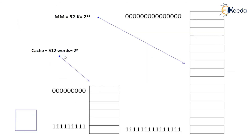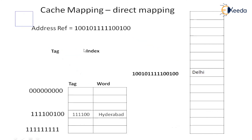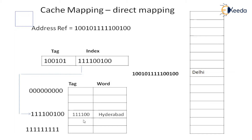To summarize direct mapping: the CPU sends a 15-digit address. That address must be searched within the cache, but there is an address mismatch — 15 digits versus 9 digits. So the address is divided into index and tag. The index is located in the cache, the tag is compared. If the tag comparison is successful, the corresponding word is read. If not, the word is read from main memory, and then transferred to the cache under the same index, replacing the previous tag and word with the current ones.